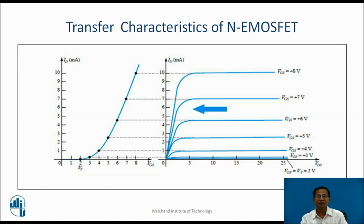This is the transfer characteristics of N-channel E-MOSFET, showing the relation between VGS and ID. As long as VGS is less than the threshold voltage, the current remains zero. Once VGS crosses the threshold voltage, current increases. When VGS is greater than threshold and less than pinch-off voltage, the MOSFET operates in the pinch-off region. Once VGS crosses the pinch-off voltage, the MOSFET enters saturation and current remains constant.